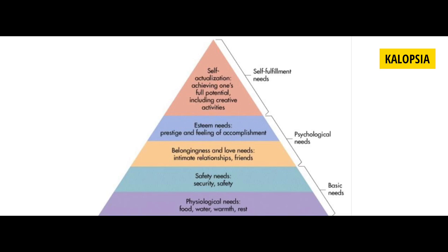Next we see the psychological needs that come after safety needs, which is belongingness and love needs, showing intimate relationships and friends. When we fulfill this stage, we go to the esteem needs — that is, prestige and feeling of accomplishment. These two needs come under psychological needs. When the basic needs and the psychological needs are fulfilled, we reach the self-actualization or self-fulfillment needs, where achieving one's potential including creative activities are seen.